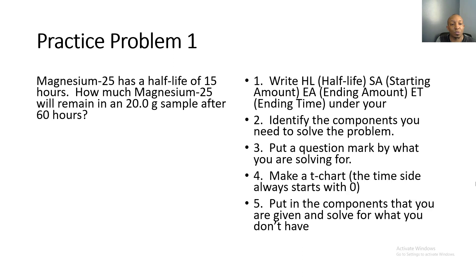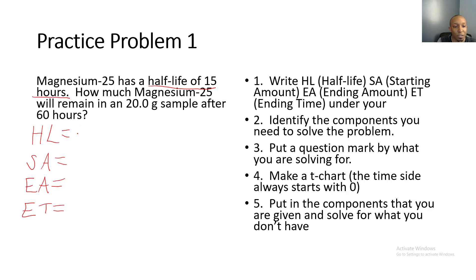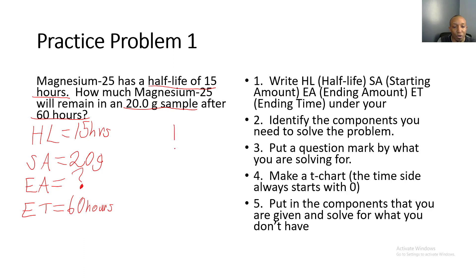Our first half-life problem: Magnesium-25 has a half-life of 15 hours. How much magnesium-25 will remain in a 20-gram sample after 60 hours? Let's write our HL, SA, EA, and ET. The half-life is 15 hours, the starting amount (SA) is 20 grams, and the ending time (ET) is 60 hours. What they don't give us is our ending amount — that's what we're solving for.